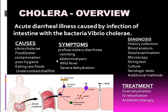Cholera overview: it is an acute diarrheal illness caused by infection of the intestine with Vibrio cholerae, transmitted via contaminated water and food, poor hygiene, raw foods, and cooked shellfish. Symptoms include watery diarrhea, vomiting, abdominal pain, mild fever, and severe dehydration. The toxin stimulates cAMP, increasing fluid loss into the intestine. Diagnosis uses history, blood analysis, stool examination, microscopy, string test, culture, and serology. Treatment is oral rehydration, IV rehydration, and antibiotic therapy.